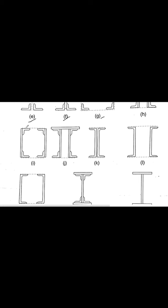Our next concern is to arrange the primary elements such that we get radius of gyration Ry and Rz with minimal difference between them. If the difference is large, the section will be vulnerable about one axis and strong about the other. We should target built-up sections having nearly the same radius of gyration about both the z-z and y-y axes, so the strength is approximately equal in both directions.